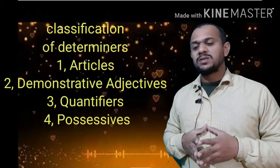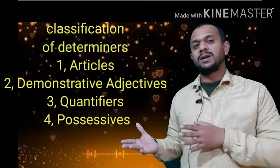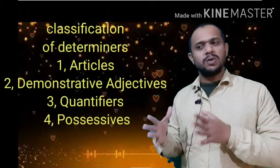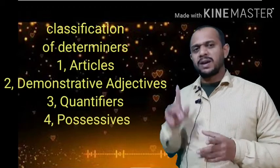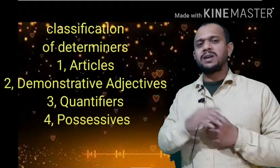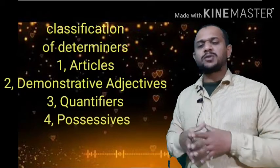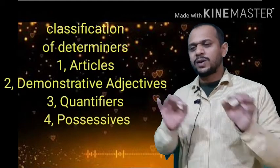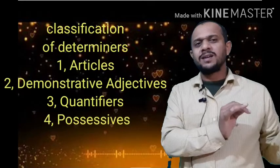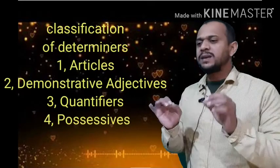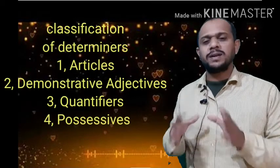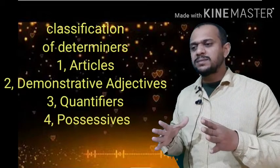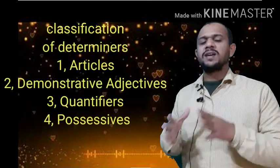Next, quantifiers. We use quantifiers for identifying quantity. In quantifiers, number one: definite quantity — meaning specific numbers like one, two, three, four, or ordinals like first, second, third. Number two: indefinite quantity — words like some, many, much, enough, few, a few, the few, little, a little, the little.